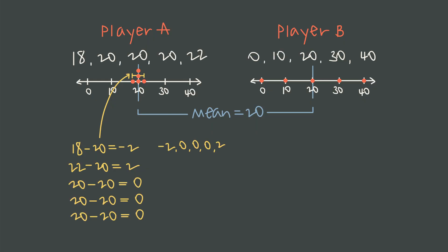If we put those together, player A's deviations are negative 2, 0, 0, 0, and positive 2. And so to find the average distance away from the mean, we might try to add them all up, but watch what happens. We get negative 2 plus all the zeros plus positive 2, and of course that total is 0. And this is the problem. The total is always 0, every time. That's because the mean is the perfect balance point. So the positive and negative deviations always cancel each other out.